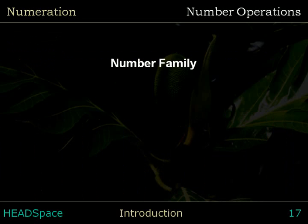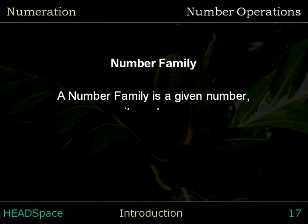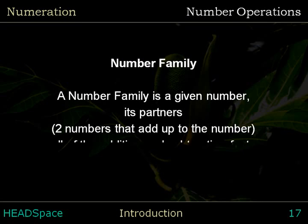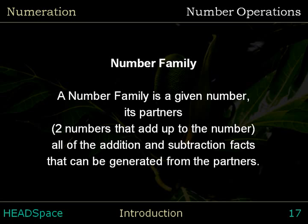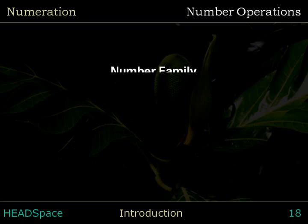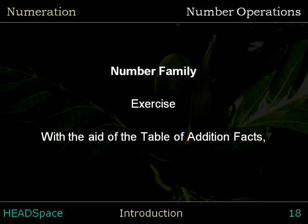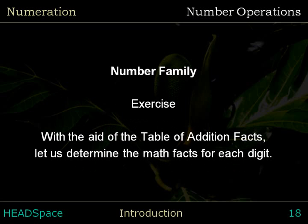A number family is a given number, its partners — two numbers that add up to the number — and all of the addition and subtraction facts that can be generated from the partners. With the aid of the table of addition facts, let us determine the addition facts for each digit.